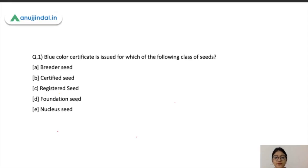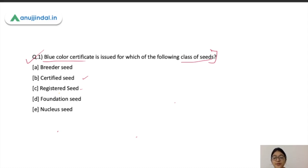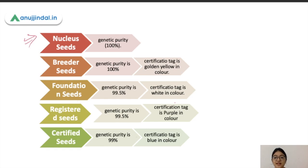Our first question: a blue color certificate is issued for which class of seeds? Seeds have different classes — nuclear seed, breeder seeds, foundation seeds, certified seeds, and registered seeds. All these seeds have different genetic purity and physical purity, and based on purity and germination capacity, different colored tags are issued. The blue color tag is given to certified seeds. I have listed all the types of seeds and their corresponding tag colors — this is very important to learn.